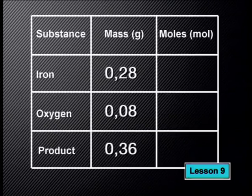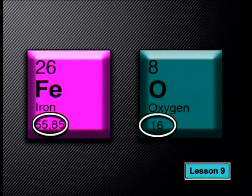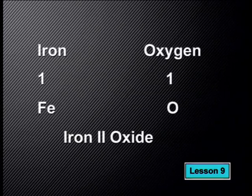We start by calculating the number of moles of iron and the moles of oxygen used in the experiment. To find the number of moles when given the mass, we use the equation N equals mass m divided by molar mass M. For elements like iron and oxygen, we can look at these values on the periodic table. The number of moles of iron and oxygen give us a ratio of 1 to 1, so the empirical formula for the product is FeO.